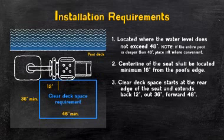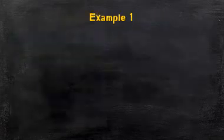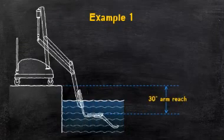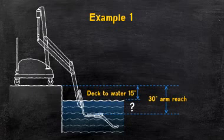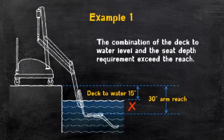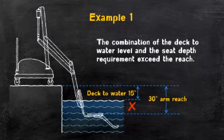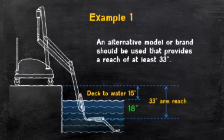Now that we understand both elements of our equation, let's take a look at a few real-world scenarios and solve for C to see if we're compliant. Pool lift A has an arm reach of 30 inches. The site has a deck to water level of 15 inches. Can you reach the required submerged depth of 18 inches with pool lift A? If you said no, you're correct. The combination of the deck to water level and the seat depth requirement exceed pool lift A's reach — in short, the arms are too short. In this particular instance, an alternative model or brand should be used that provides a reach of at least 33 inches.